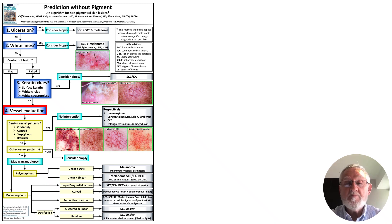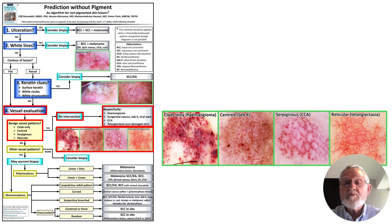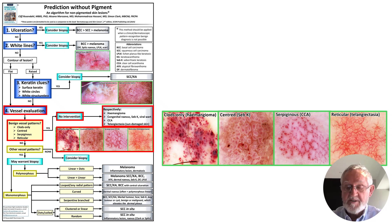The fourth step in the simple method is vessel evaluation, and there are four benign patterns. In a stable lesion, if one of these patterns is the only pattern present, the lesion will be predictably benign. The four benign patterns are: clods only in haemangiomas; centred in seborrhoeic keratosis, congenital naevi or warts; serpiginous in clear cell acanthoma; and reticular in telangiectasia. The reticular pattern is the normal pattern of the superficial dermal plexus, which becomes visible on sun-damaged skin because the dermis is thinned by ultraviolet damage.